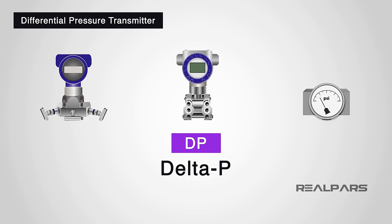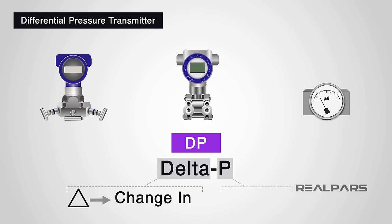Delta P or DP is the industry standard term for the measured differential pressure — delta meaning change in, and P meaning pressure. Most people will simply call a differential pressure sensor a DP sensor or transmitter. From now on, we will refer to these devices as DP transmitters.